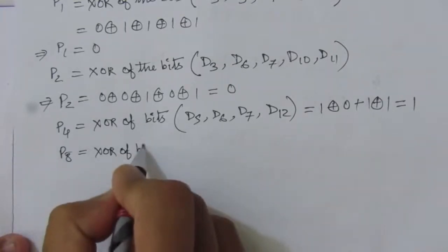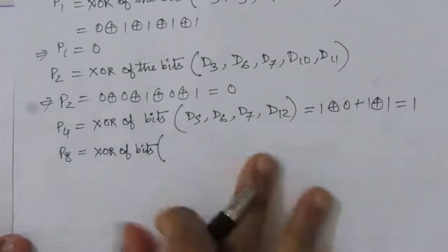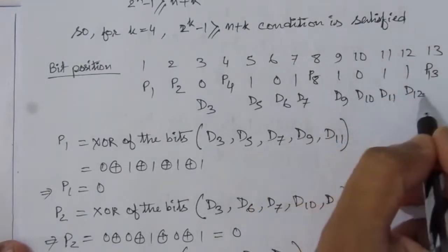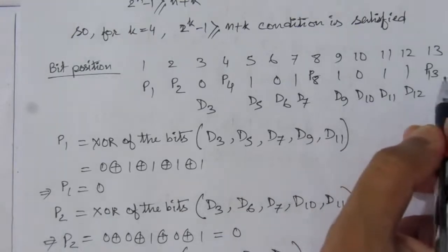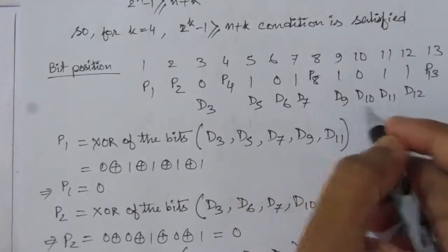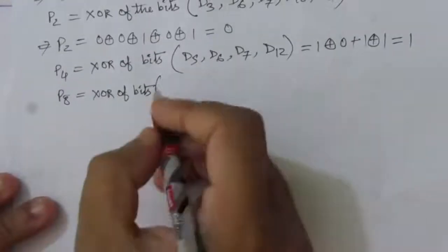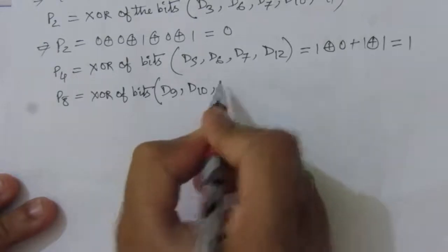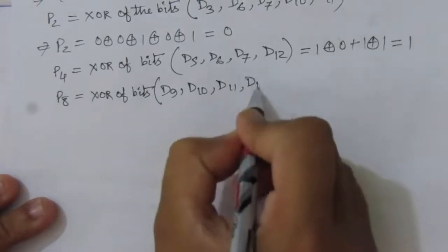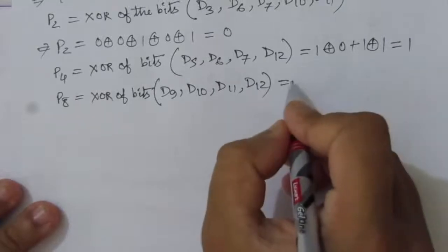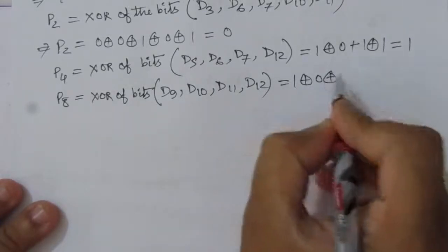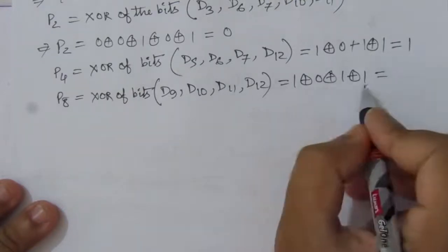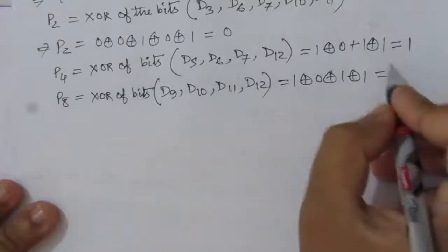For p8 we take eight bits at a time. After p8 we consider d9, d10, d11, and d12 (p13 is a parity bit so we skip it). Values: d9=1, d10=0, d11=1, d12=1. XORing: 1 XOR 0 XOR 1 XOR 1 = 1. There are three ones, so p8 equals 1.